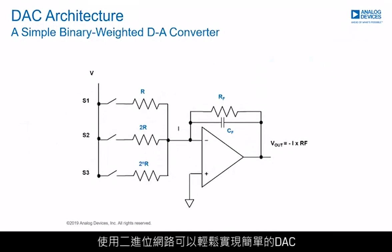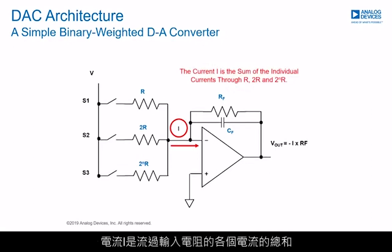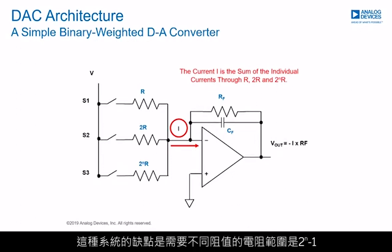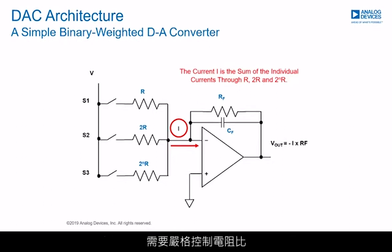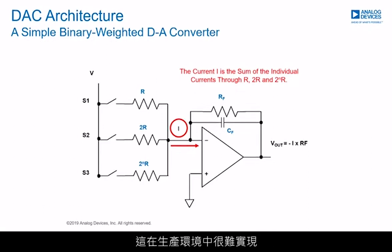A simple DAC can be easily implemented using a binary weighted network. The current I is the sum of the individual currents through the input resistors. An N-bit DAC of this nature can be implemented with N resistors. The drawback is that a range of different resistance values are required — 2 times N-1. The resistor ratios need to be tightly controlled to maintain accurate performance and monotonic behavior, which is very difficult to achieve in a production environment.